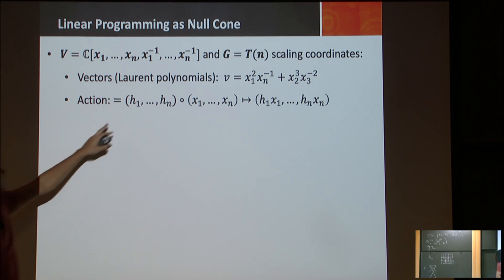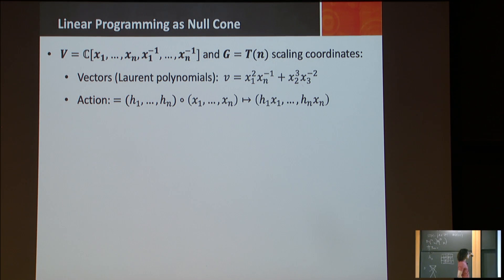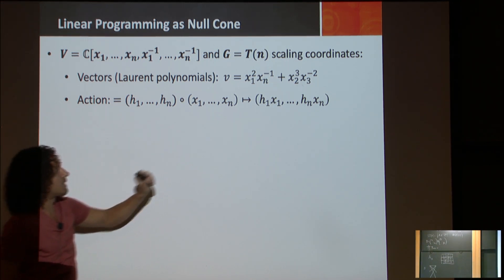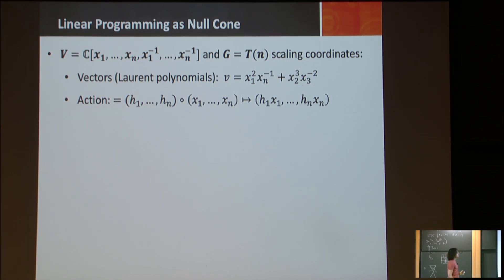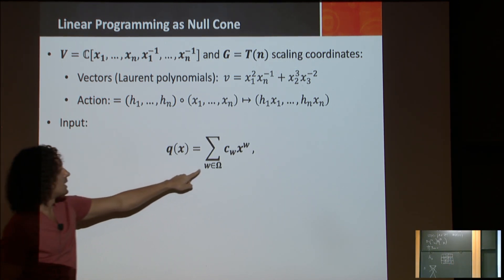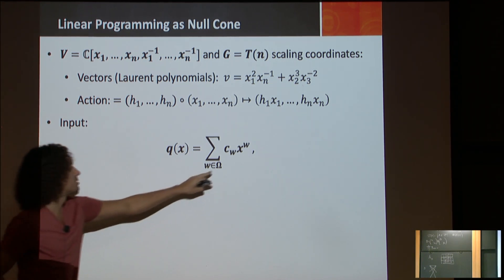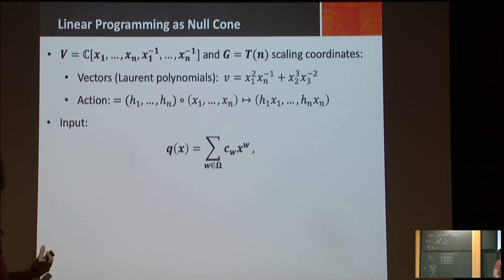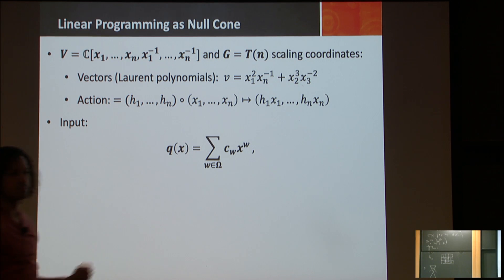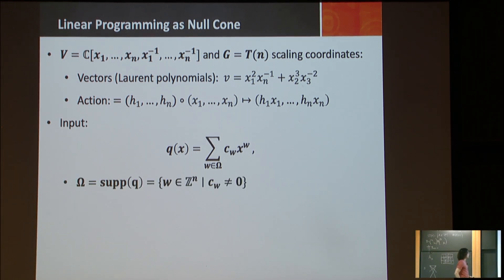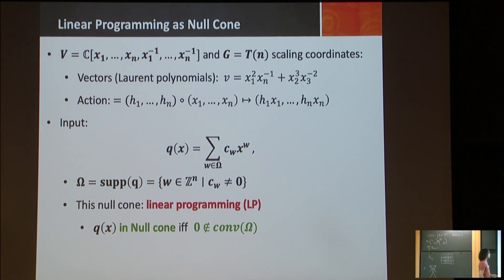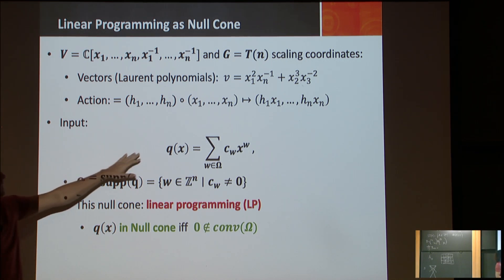Your action with (h_1, ..., h_n) in the torus acts on coordinates x_1, ..., x_n by scaling each coordinate appropriately. This null cone is equivalent to linear programming: q is in the null cone if and only if zero is in the orbit closure, if and only if there's a scaling action that can drive q to zero. And this is in the null cone if and only if zero is not in the convex hull of the support.